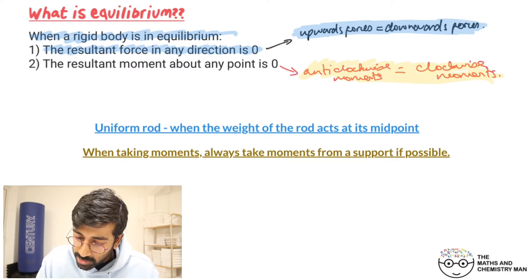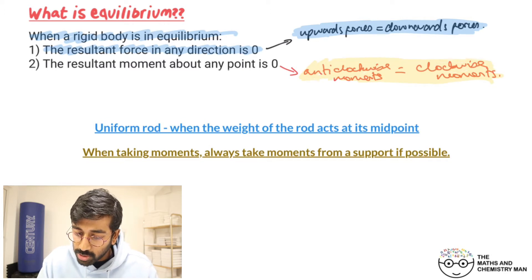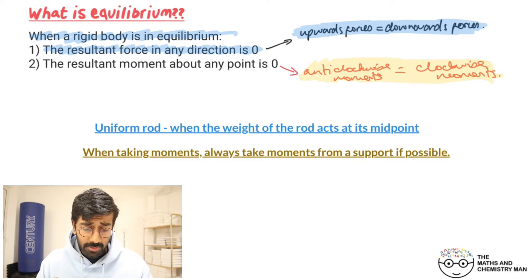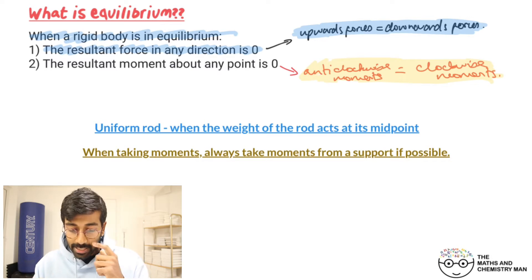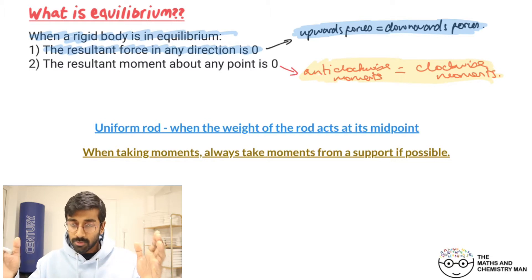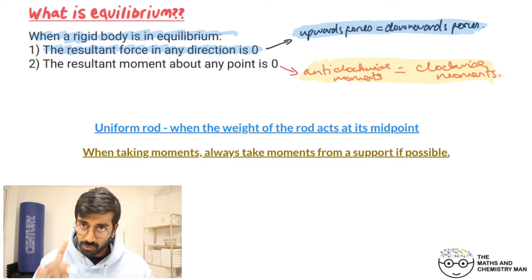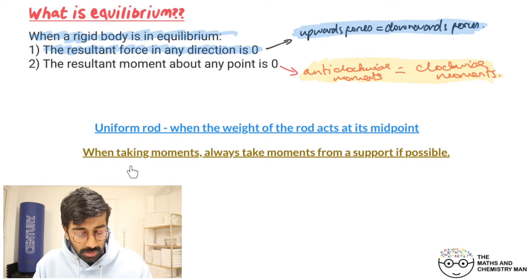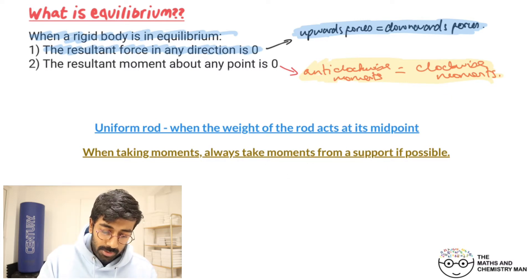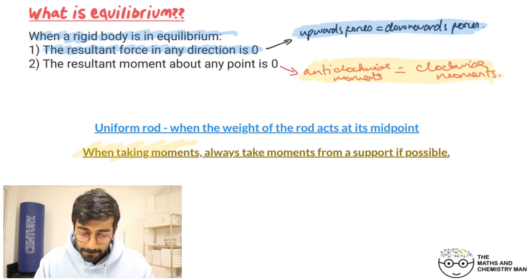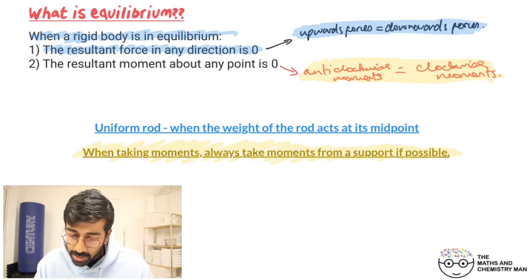Jot that down on the side of your page and we'll look at how to use it when we come to an example. Before we get to examples, a couple of terms: a uniform rod means the weight of that rod acts exactly at its midpoint. So if you've got a six-metre rod, its weight acts exactly at three metres. Also, when taking moments, always try to take moments from a support if possible.